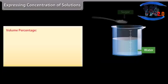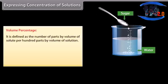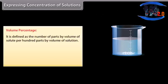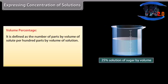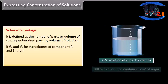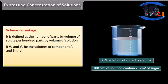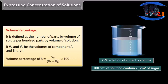Volume percentage is defined as the number of parts by volume of solute per hundred parts by volume of solution. If V_A and V_B are the volumes of components A and B, then volume percentage of B is equal to V_B divided by (V_A plus V_B), multiplied by 100.